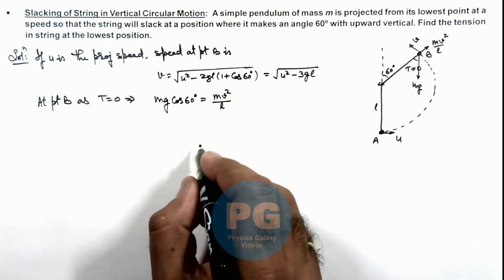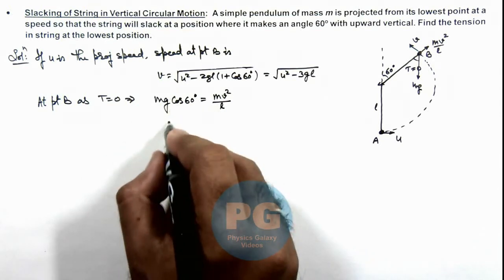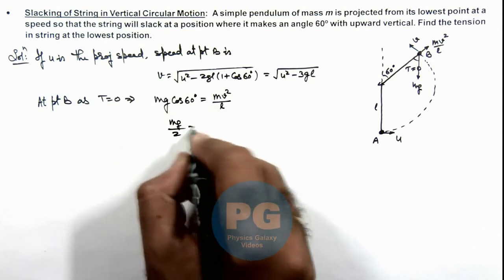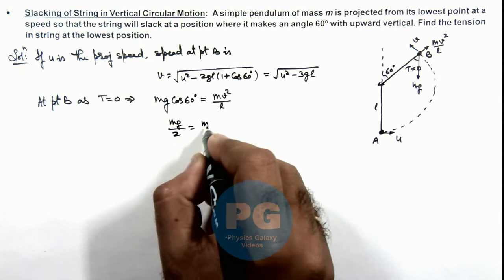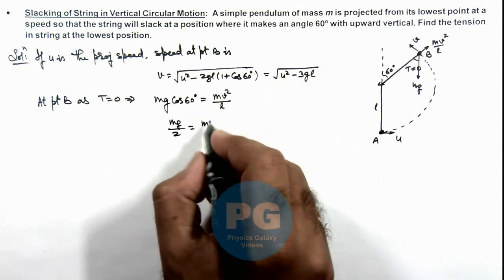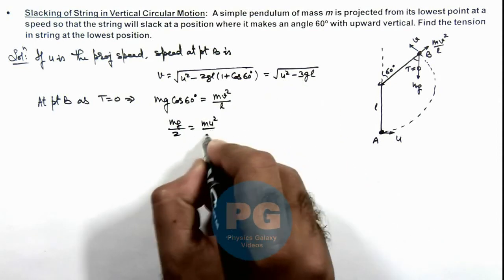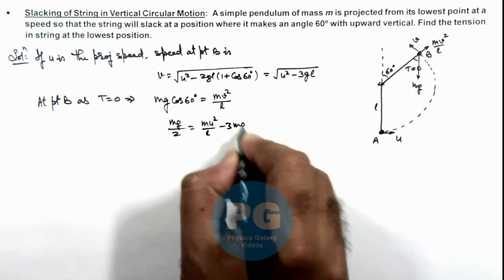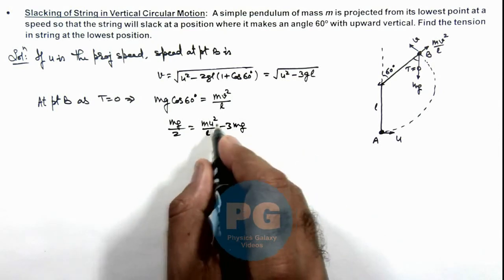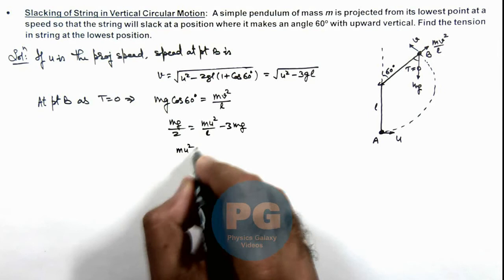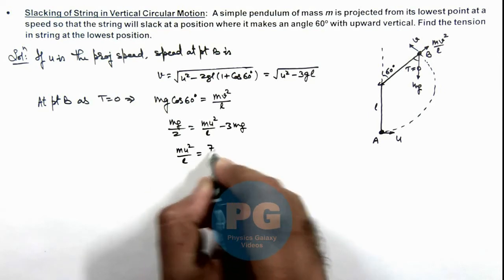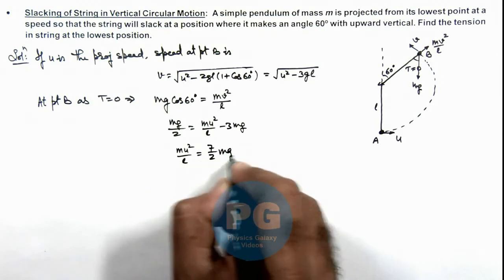And here, if we substitute the values, this is mg by 2 is equal to m by l. v square is u square minus 3gl. This is mu² by l minus 3mg. So this gives us mu² by l is equal to 7 by 2 mg.